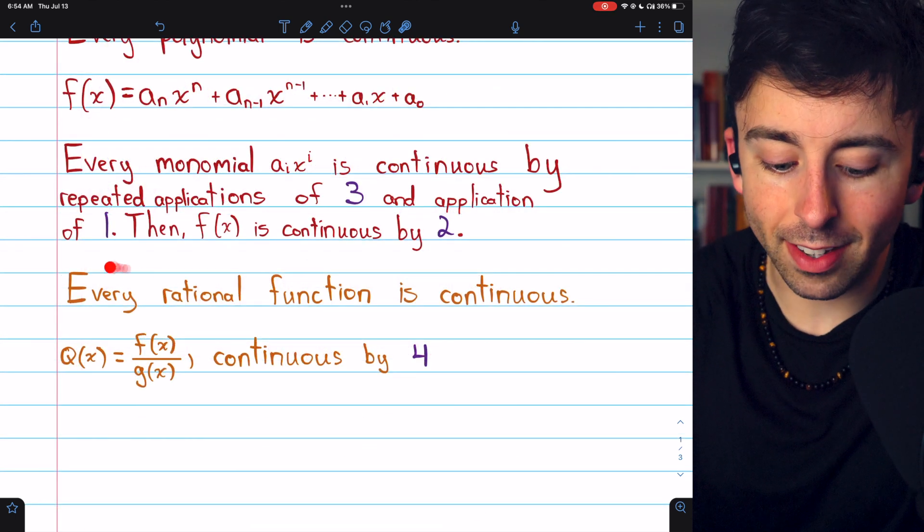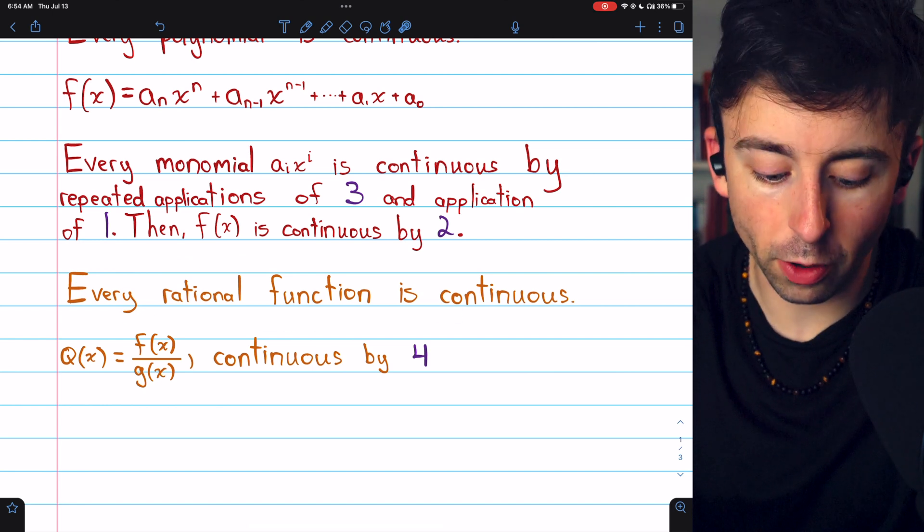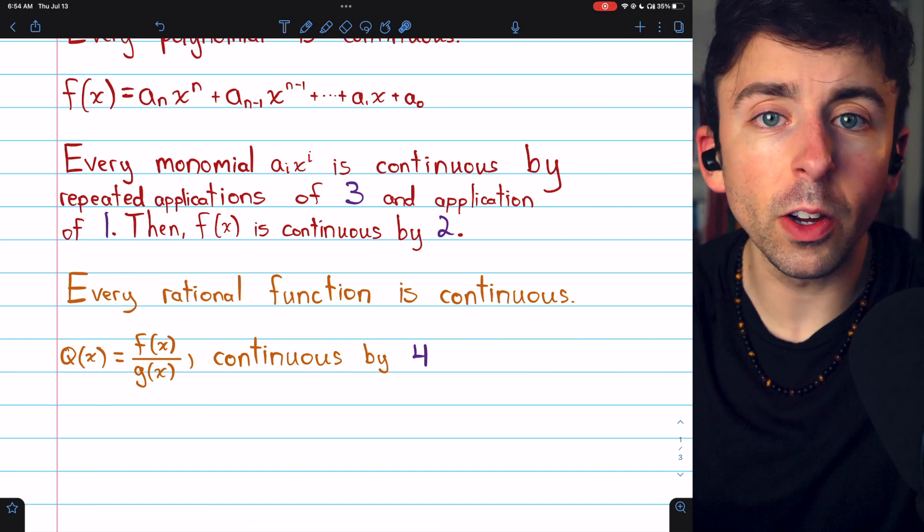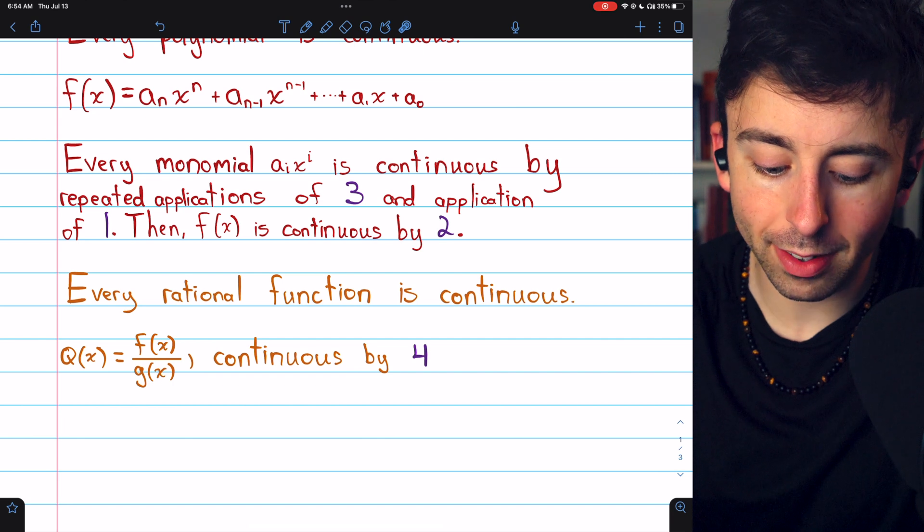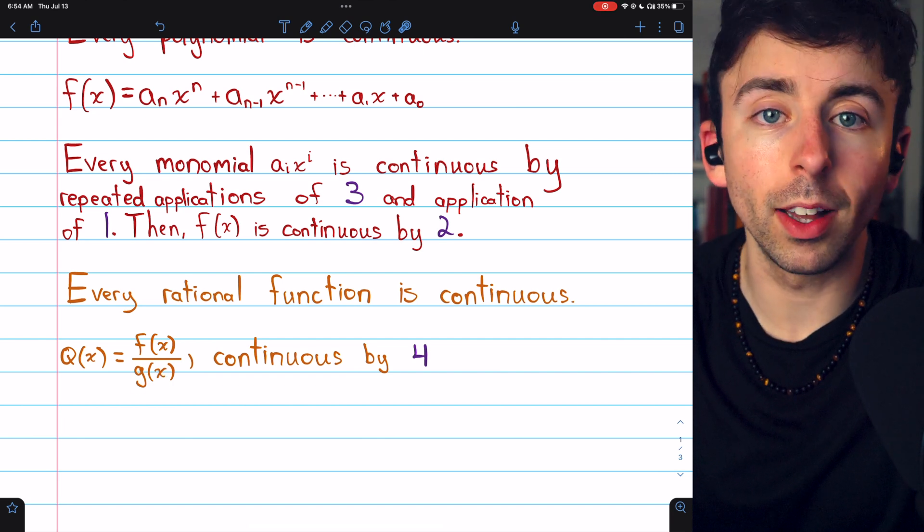And this also guarantees us that every rational function is continuous. A rational function q of x is a function of the form f of x divided by g of x, where f and g are polynomials.